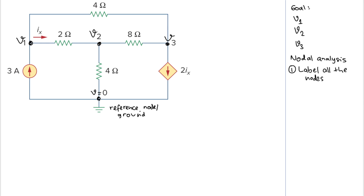We also need to extract some more information. We have a dependent current source here and it depends on ix, so we need to calculate what ix is. ix is the current that passes through this 2-ohm resistor. The current equals voltage divided by resistance, so ix = (V1 − V2) / 2, where V1 is where the current comes from and V2 is where the current goes to.